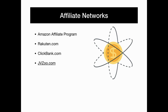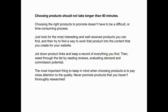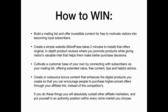Choosing an affiliate network: start off with the Amazon Affiliates Program, Rakuten.com, ClickBank.com, and JVZoo.com. Choosing products shouldn't take longer than an hour — just look for the most interesting and well-received products and find a way to incorporate those into high quality content. Record everything you find, then weed through the list by reading reviews and evaluating demand and commission potential. The most important thing is to choose products that are high quality — never promote products you haven't thoroughly researched. To win: build a mailing list and offer incredible content for free in order to motivate your visitors into becoming loyal subscribers and customers.